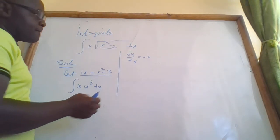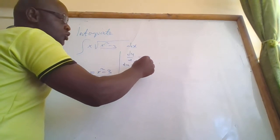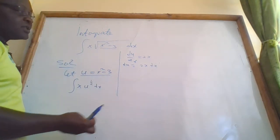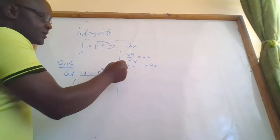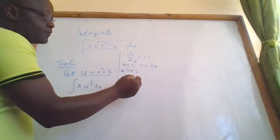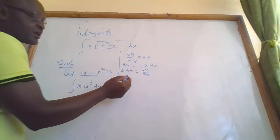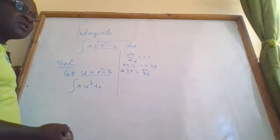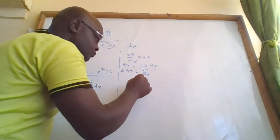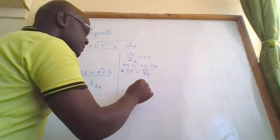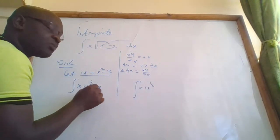So here we have du equals 2x dx. But if we want to make dx the subject, we divide both sides by 2x. Therefore dx equals du over 2x. We have now expressed dx in terms of du.